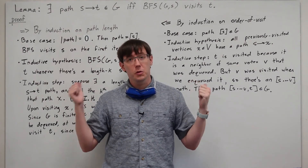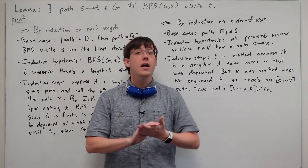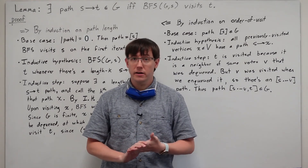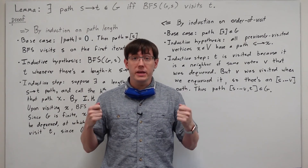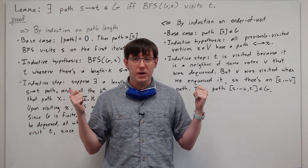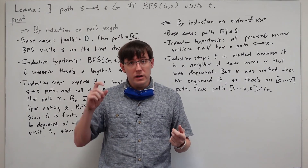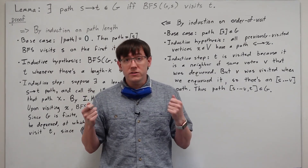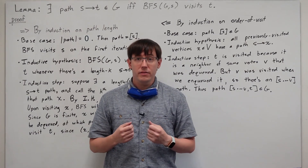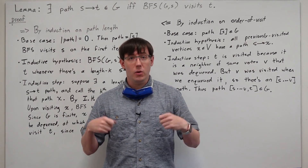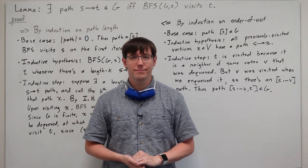Your task now is to think about how this lemma helps us prove the correctness of both versions of the strongly connected component algorithm. The first, less efficient version should be easy to prove once we have this lemma, whereas for the second version, we're going to need to think a little bit about what's going on when we build the reverse graph and how that gives us the information we need to find a strongly connected component.